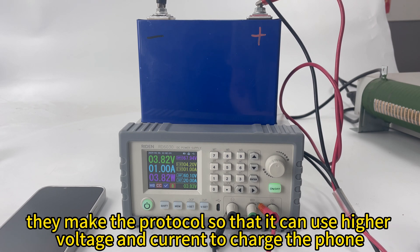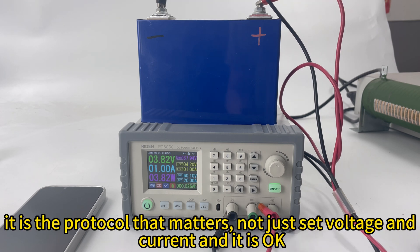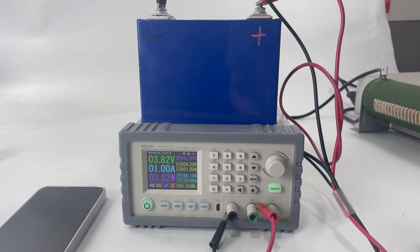They make the protocol so that they can use the fast charge to charge the phone. Like 9V, 2A, 45W, 90W. These are protocols. Not just set the voltage and current on the power supply. You can use the fast charge. They are different.